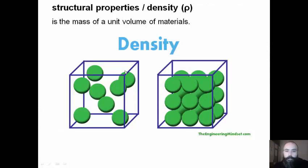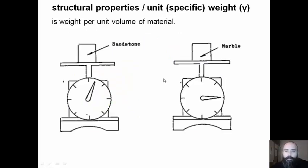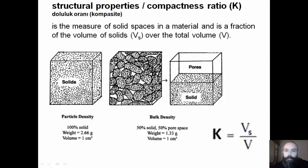Related to this, we have density, the mass of a unit volume of material. We have unit weight, the weight per unit volume of material. Compactness ratio is the measure of solid spaces in a material, the fraction of volume of solids over the total volume.